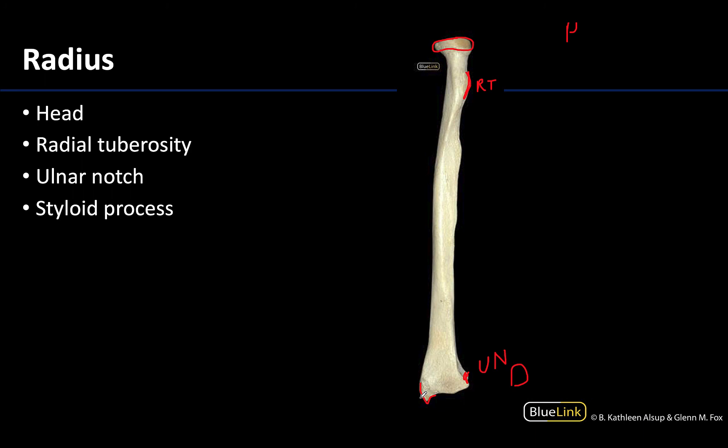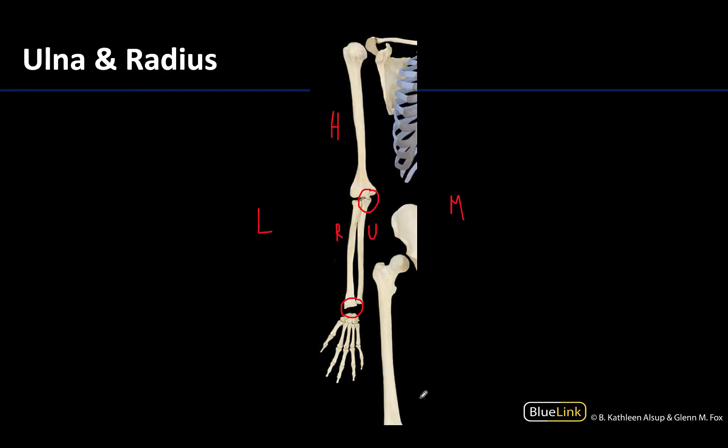Those are the bones of the forearm. Take your time to review and go back to this image to make sure you have an understanding of how they are organized in anatomical position and how they articulate with one another. Thank you for your time and attention, and always feel free to reach out with any questions.